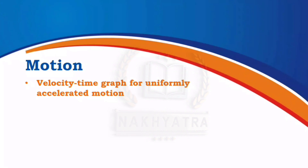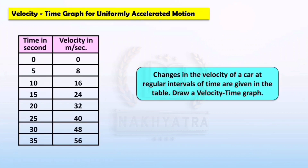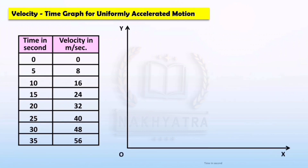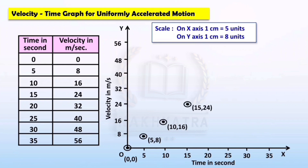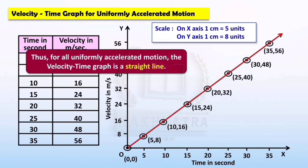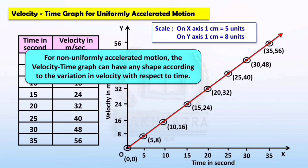Now see the velocity-time graph for uniformly accelerated motion. The changes in the velocity of a car at regular intervals of time are given in a table, and we draw a velocity-time graph. The scale on the x-axis is 1 cm equal to 5 units and on the y-axis 1 cm equal to 8 units. After plotting and joining the points we see a straight line — for uniformly accelerated motion the velocity-time graph is always a straight line. For non-uniformly accelerated motion, the velocity-time graph can have any shape depending on the variation in velocity with time.